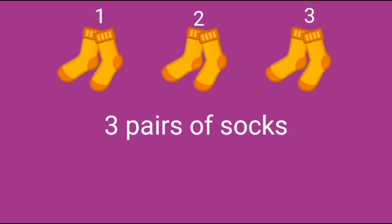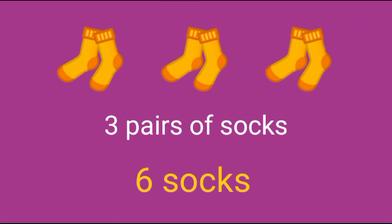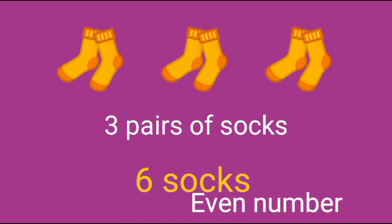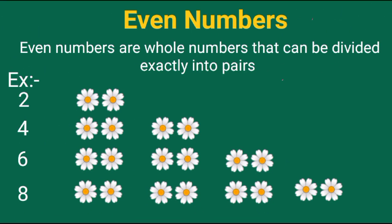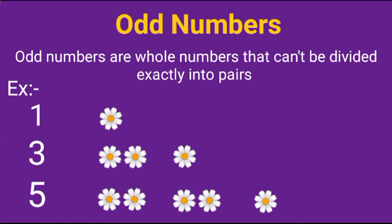Look at this picture children. How many pairs of socks are seen here? There are 3 pairs of socks. Then how many total socks are there? There are totally 6 socks. Is 6 an even or odd number? Yes, 6 is an even number, so an even number of socks are seen here. So even numbers are whole numbers that can be divided exactly into pairs, whereas odd numbers are whole numbers that cannot be divided exactly into pairs.